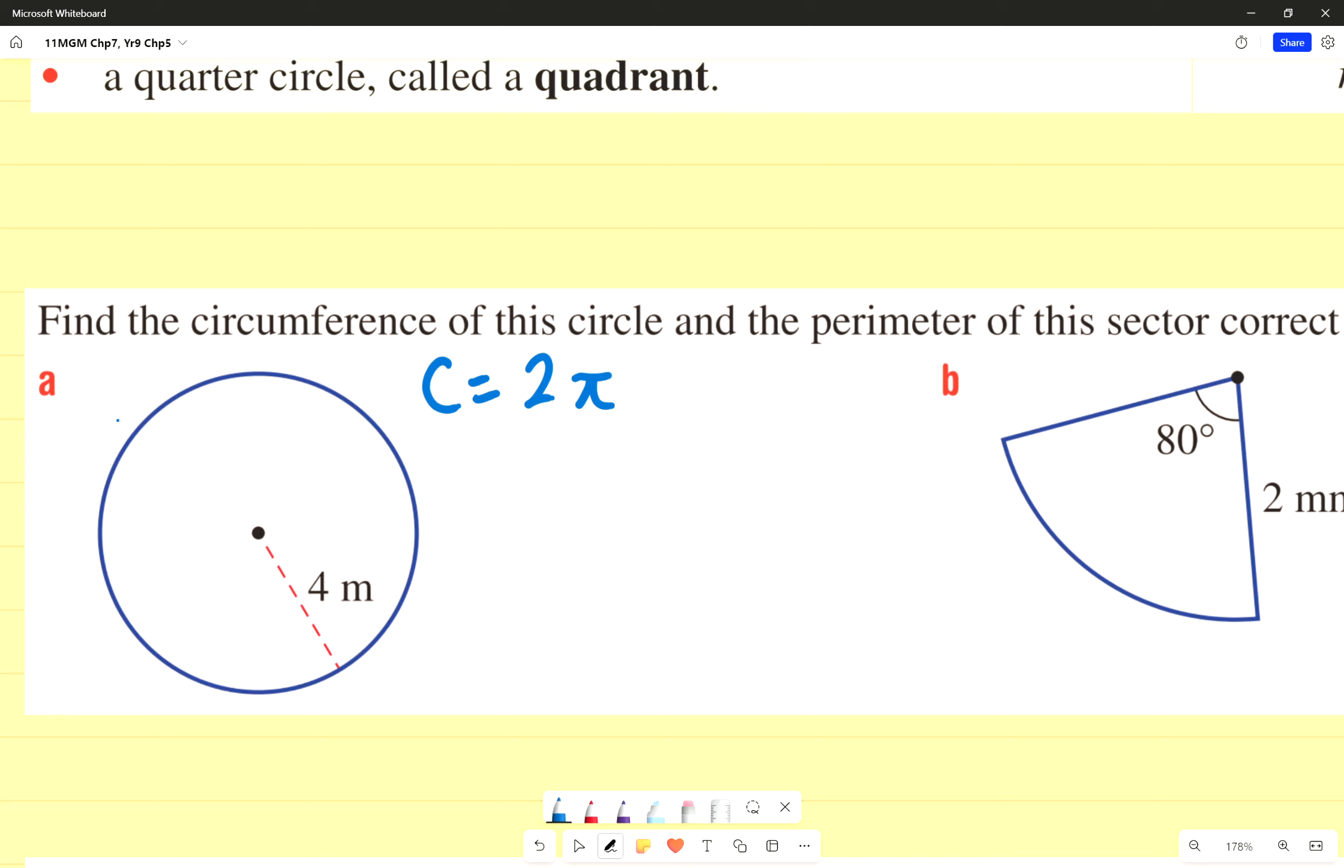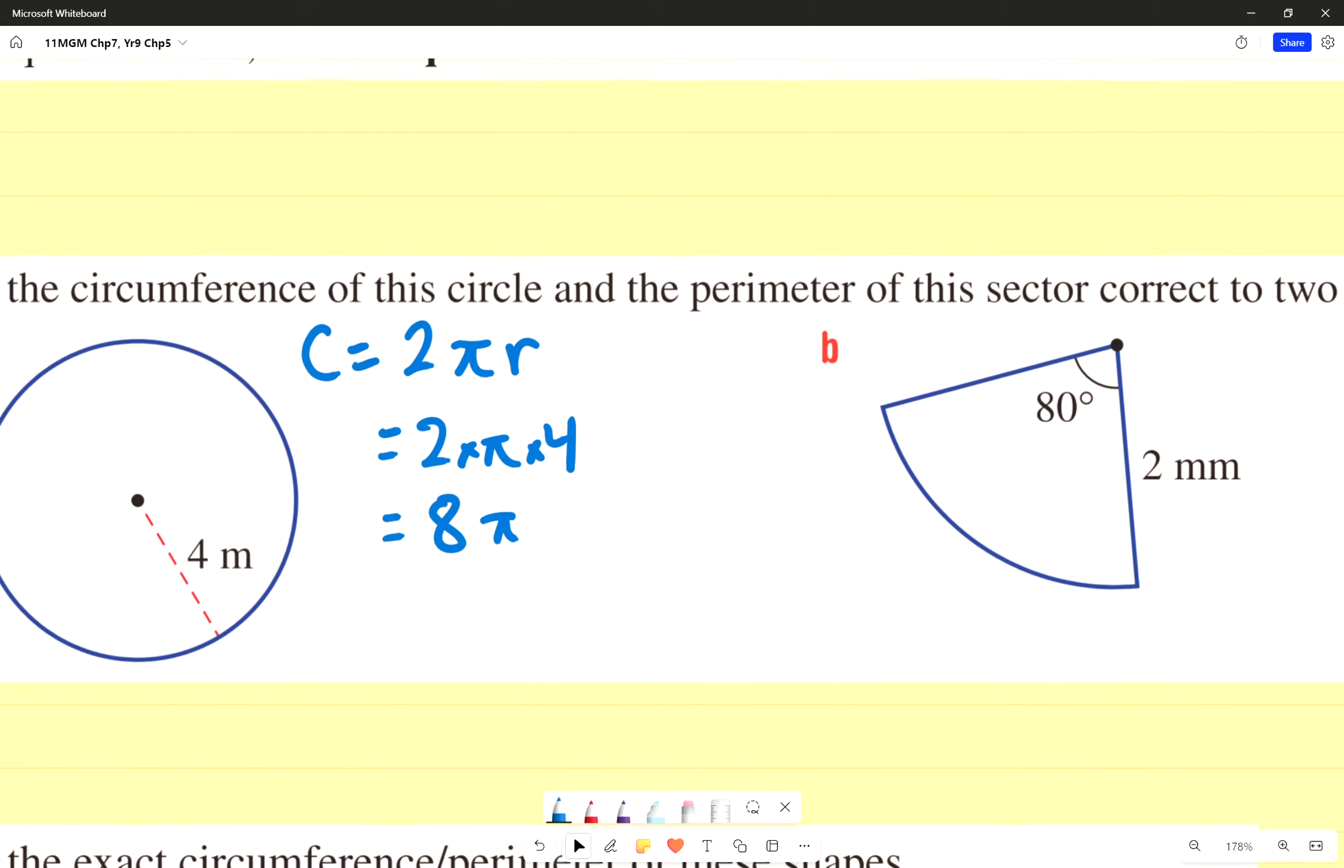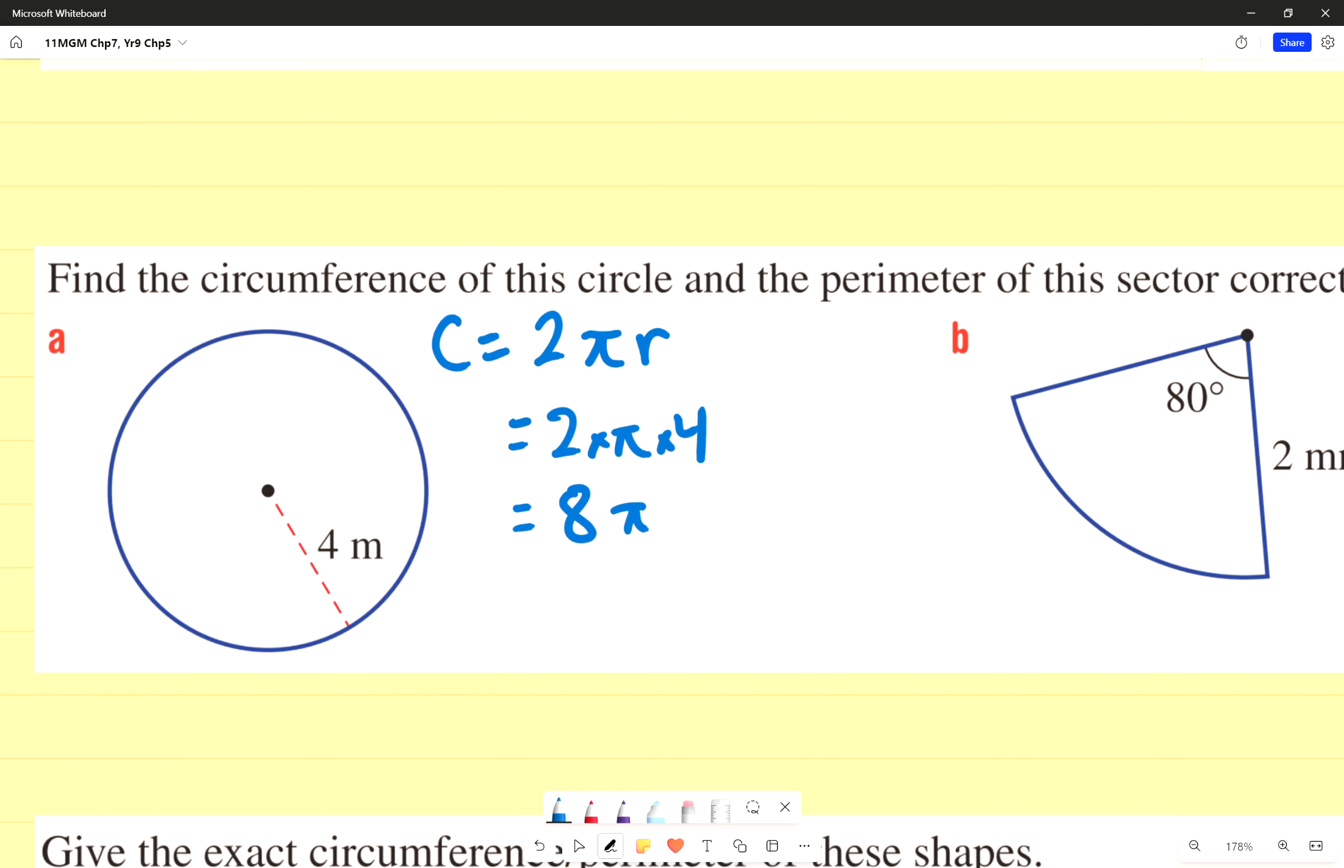So it'll be 2 times π times R, which is 2 times π times 4, in this case, which will give me an answer of 8π. But the question says, correct to 2 decimal places, which is why I need my calculator. I get 25.13.